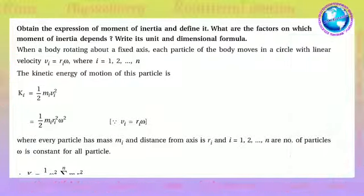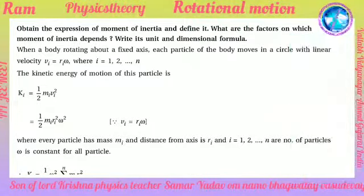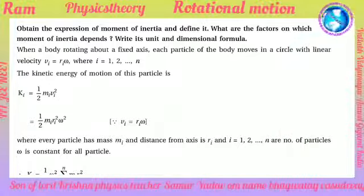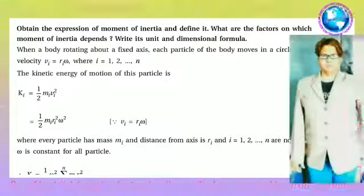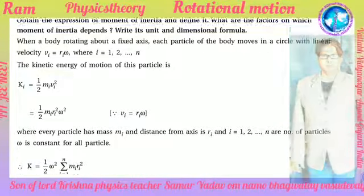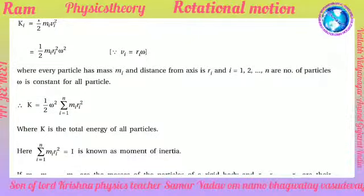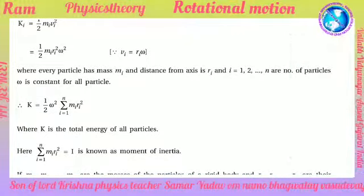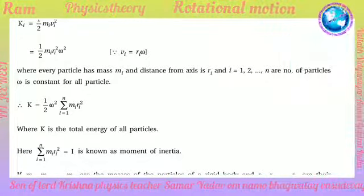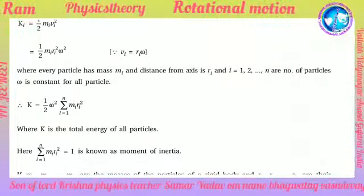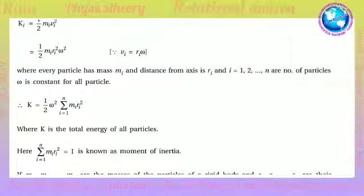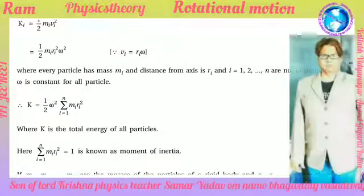The kinetic energy is ki = 1/2 mi vi^2 = 1/2 mi ri^2 omega^2, where vi = ri*omega. Each particle has mass mi and distance from the axis ri, where i = 1, 2, 3... are the number of particles.